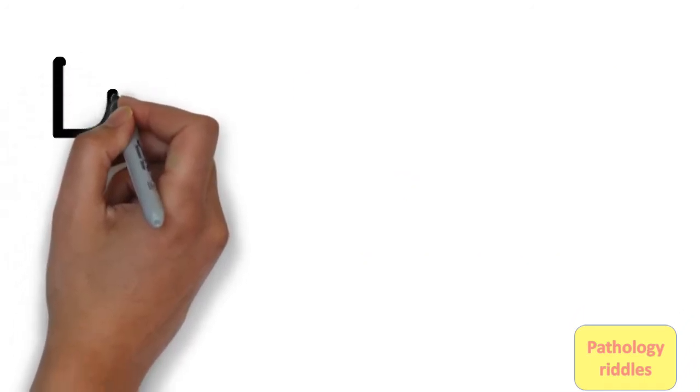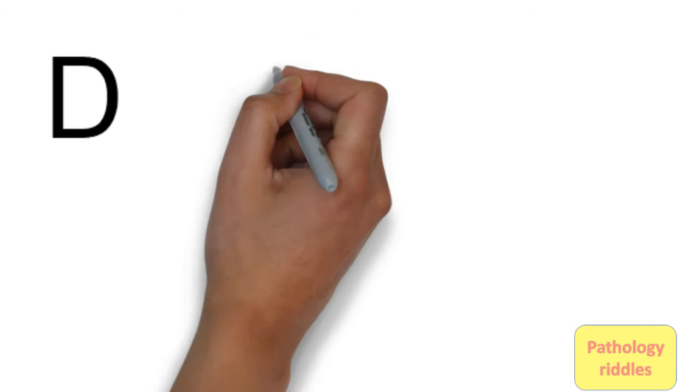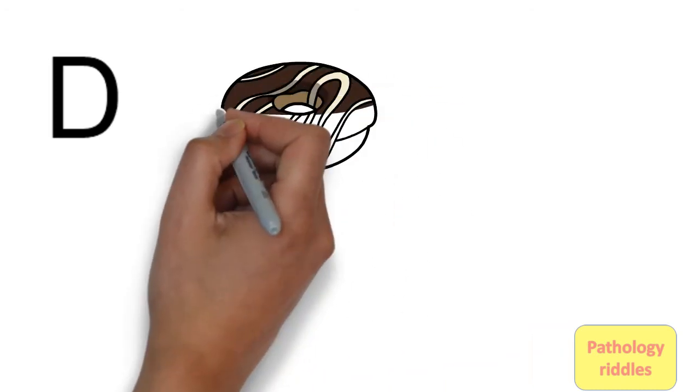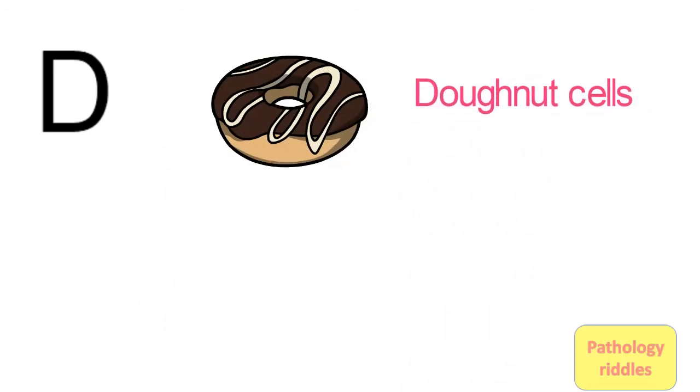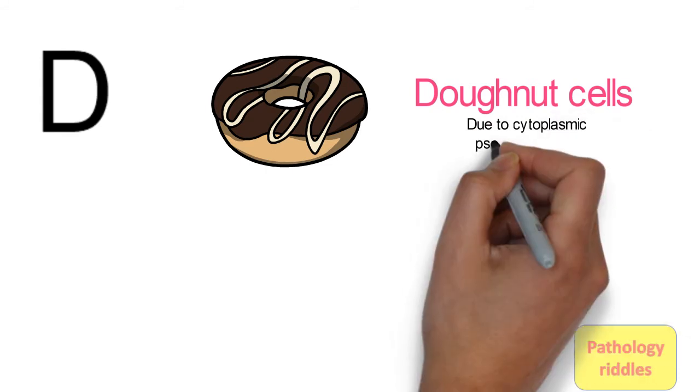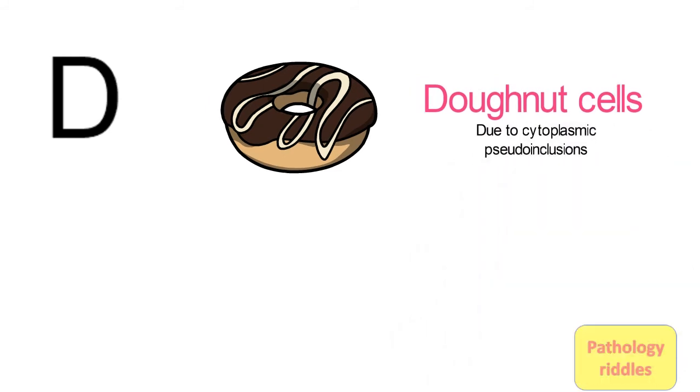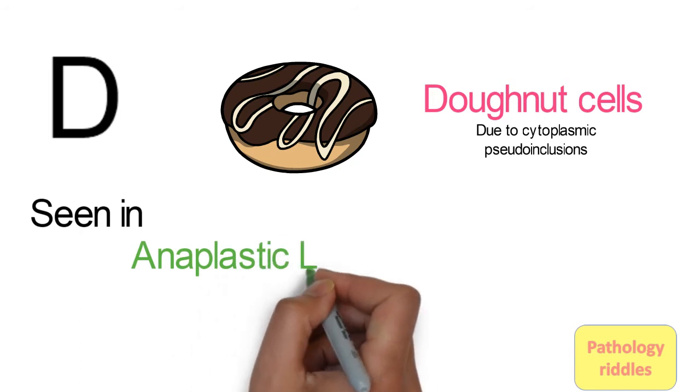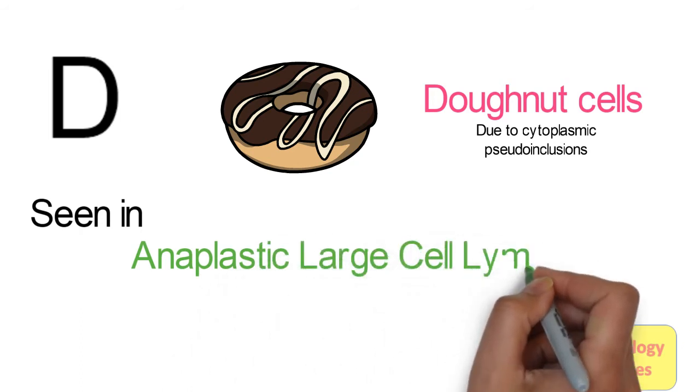After this we go to D. D is for donut cells. These donut cells are formed due to invaginations of the nuclear membrane forming pseudo-inclusions, and they are seen in anaplastic large cell lymphoma.